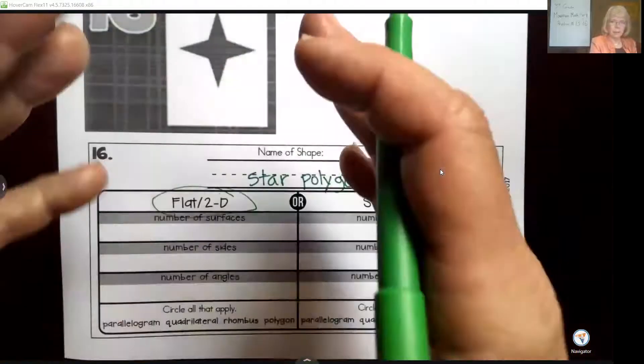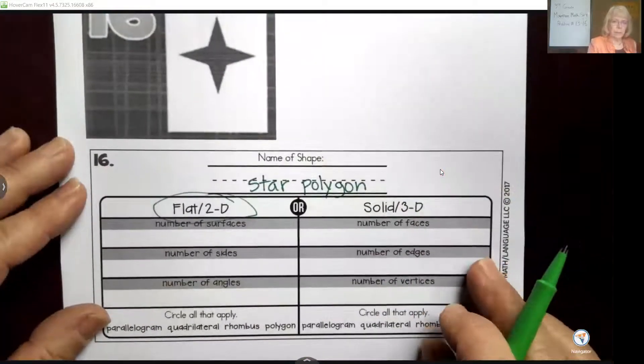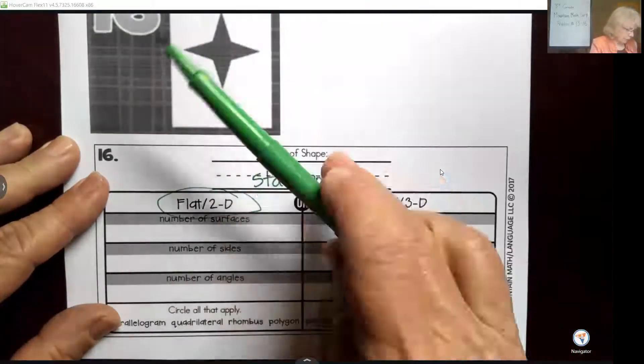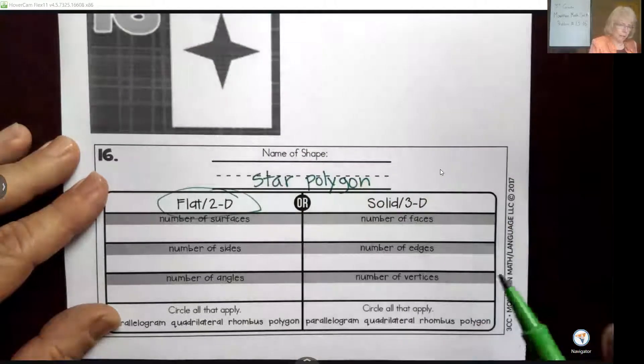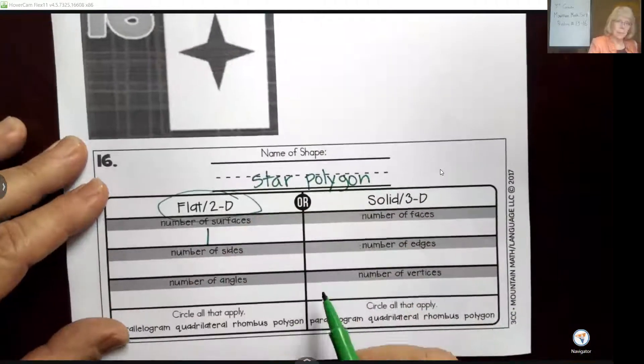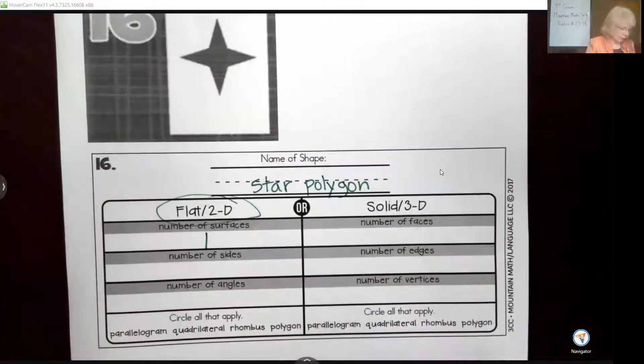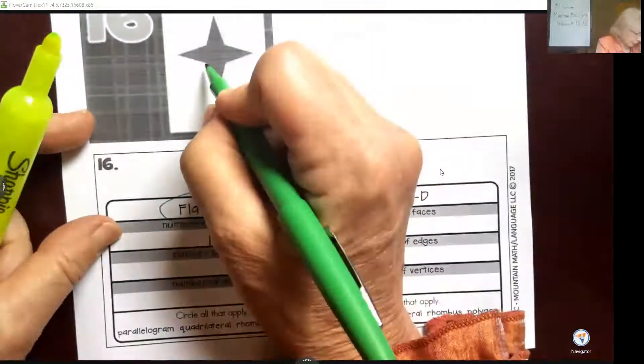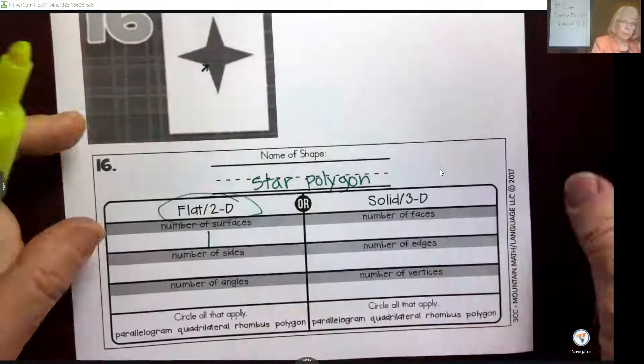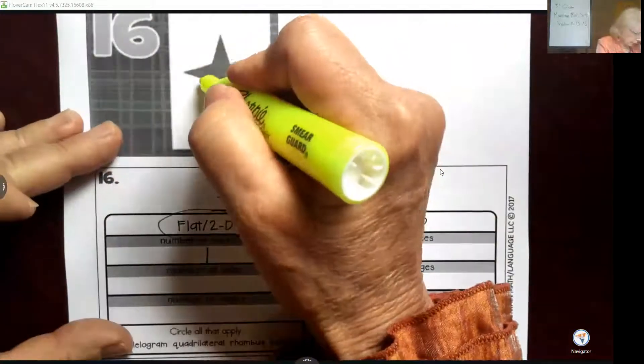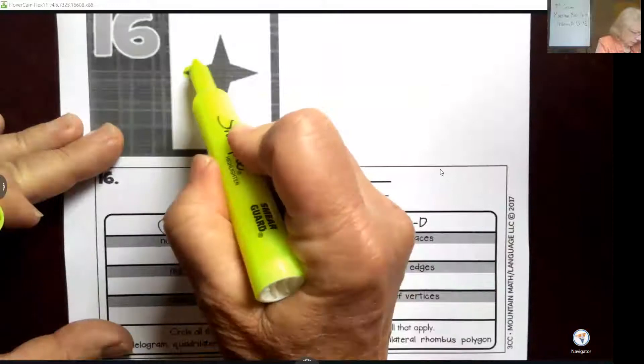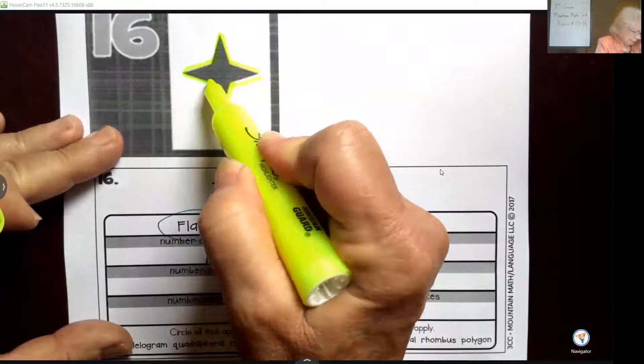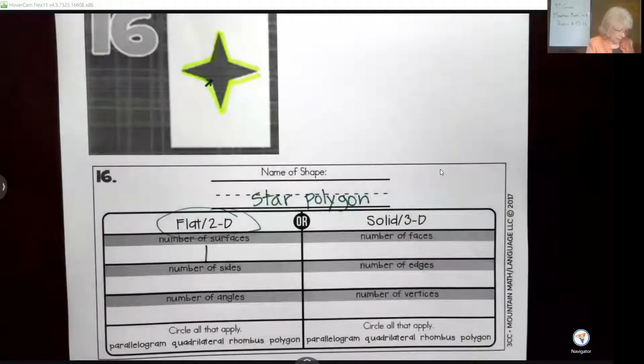In terms of the number of surfaces, it's just the flat surface, which is one surface. The number of sides we have to count carefully. I always like students to start in one place. Let's say I'm going to start right here. I'm going to count the sides and go: 1, 2, 3, 4, 5, 6, 7, back to the beginning, 8. So I have eight sides.